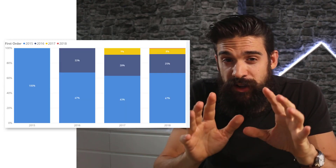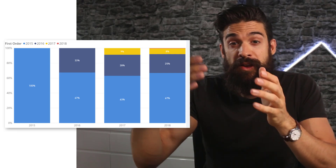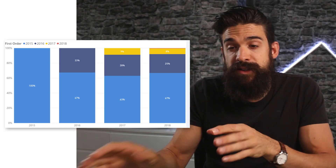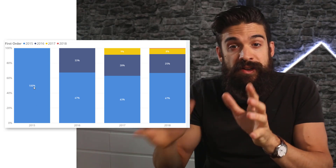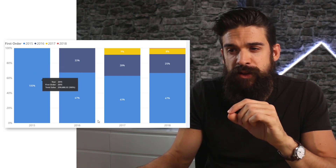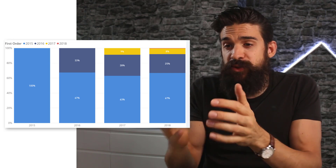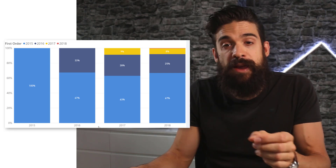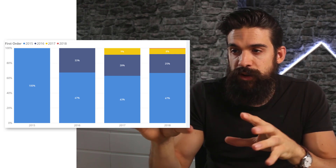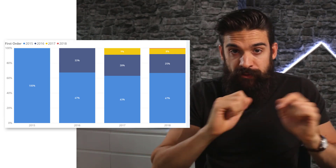To dive a little bit deeper, we're going to create cohorts on the basis of the year in which the customers placed their first order. Our business started off in 2015, so we have 100% from 2015 in its first column. Then for 2016, you see how much of our sales is actually coming from customers from one year before that — and the same for 2017 and 2018. The 100% stacked column chart really underlines this first insight.